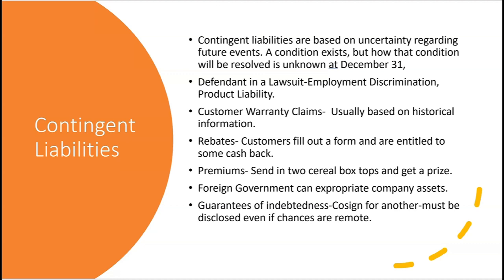Another example is customer warranty claims. Because you have sales, you could have a liability for warranty. Usually based on historical information, an estimate is made on future losses due to warranty claims. So how much is recognized at December 31st, or is it just a footnote disclosure? The contingent liability could be from a lawsuit or from customer warranty claims.